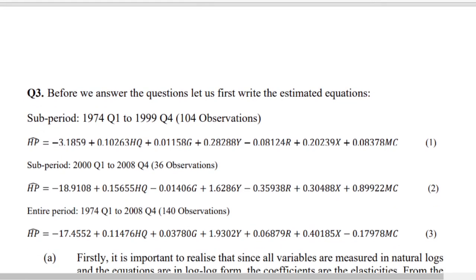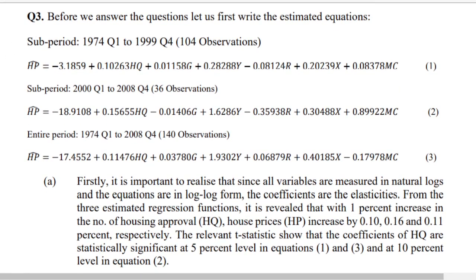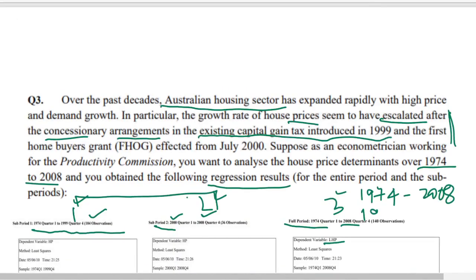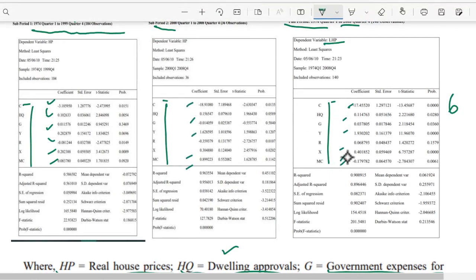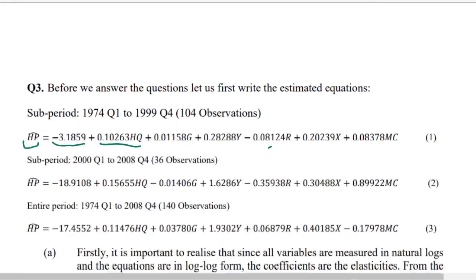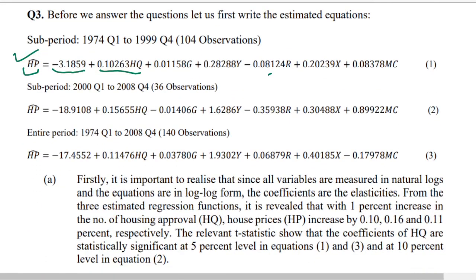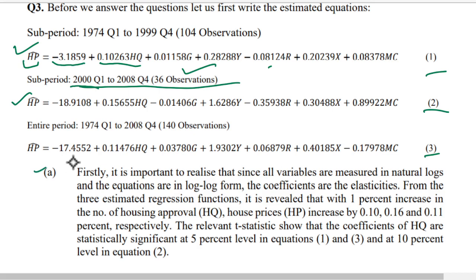Before doing anything with the regression results, first write the values in equation format. This is the estimated household price equation — you take the values directly from the regression results and write them in equation form so you can refer to them during interpretation. The second sub-period has 36 observations and gives the second regression result, and likewise for the third.